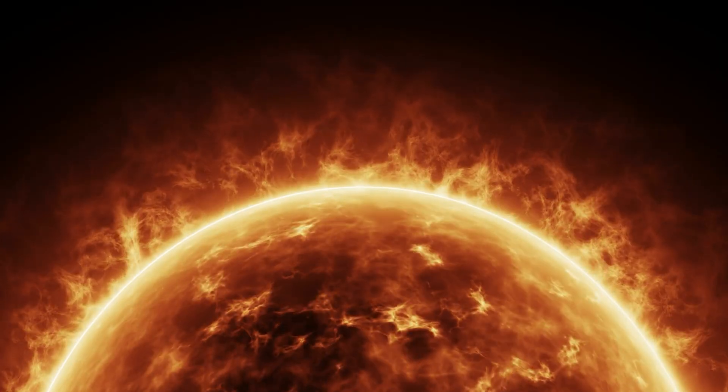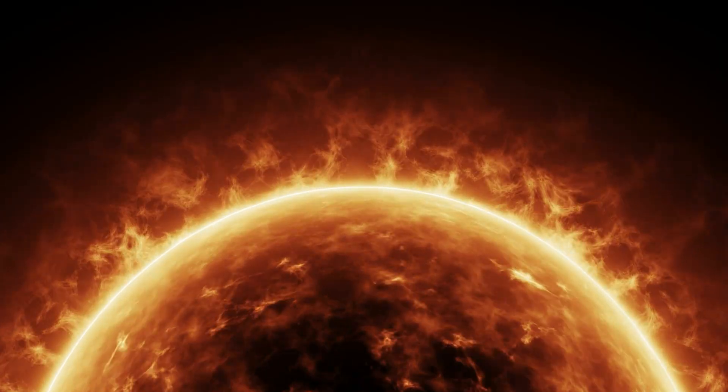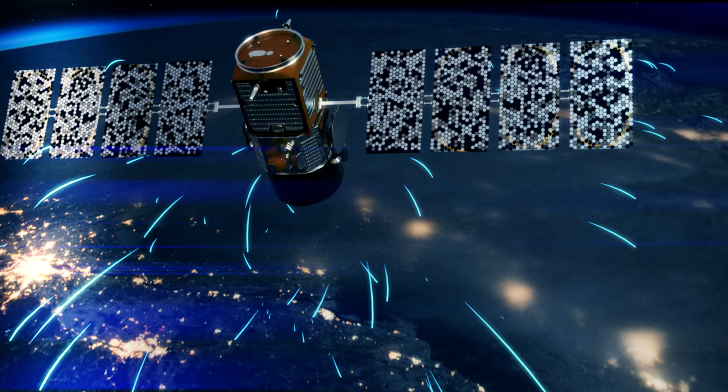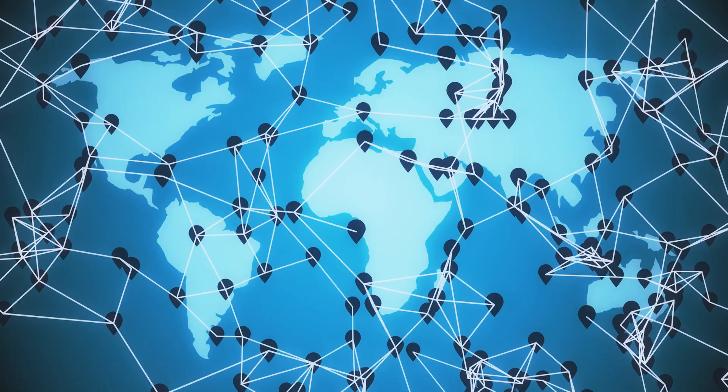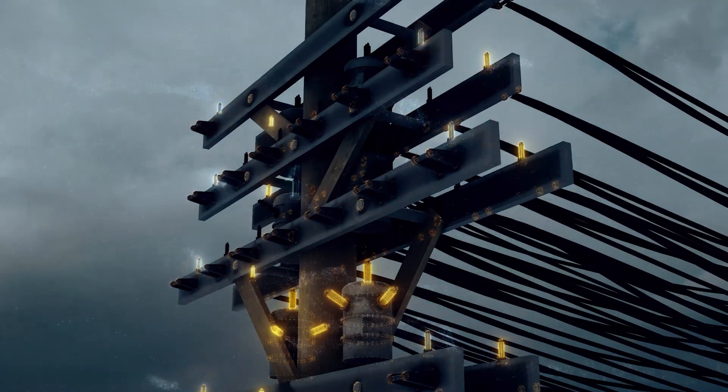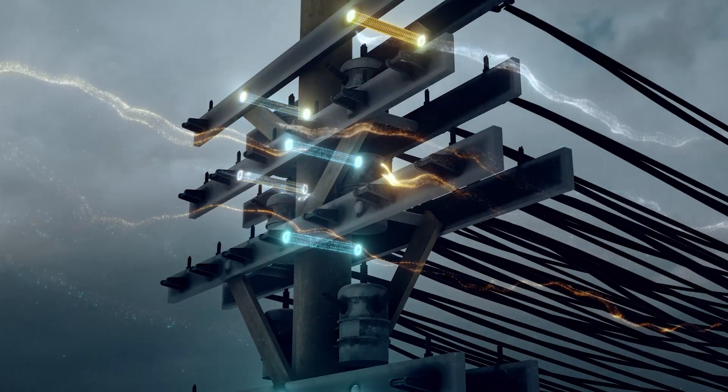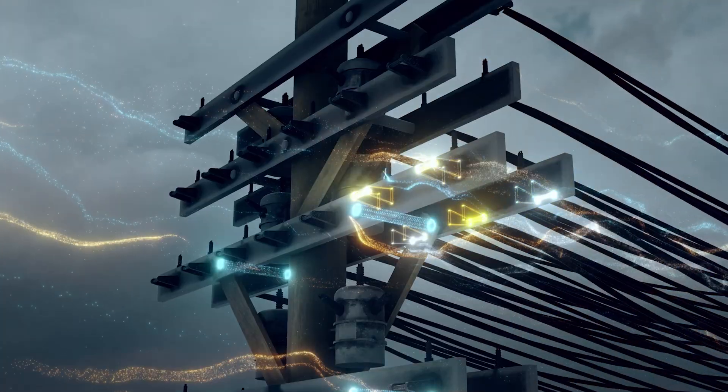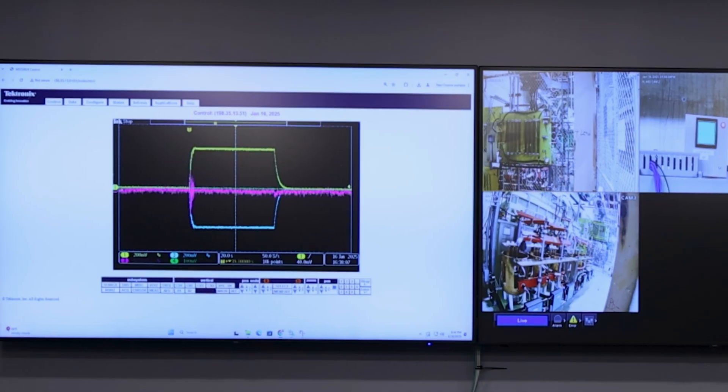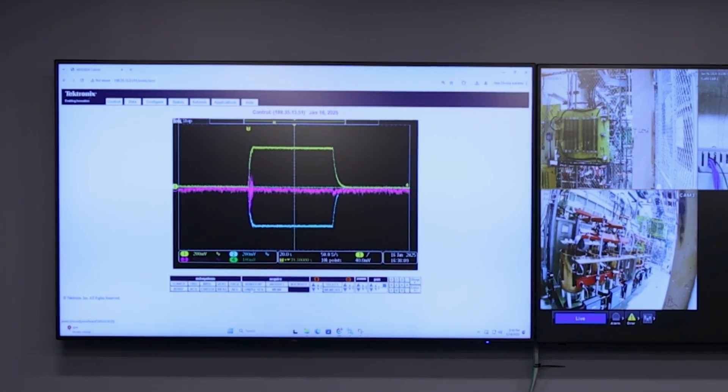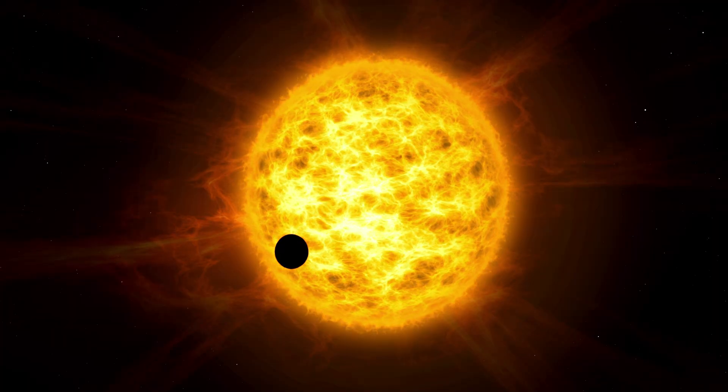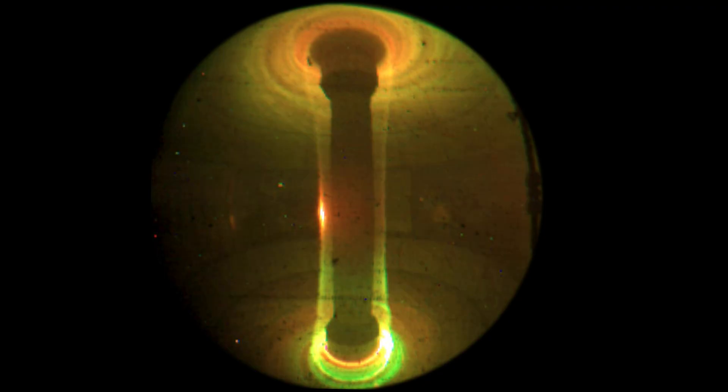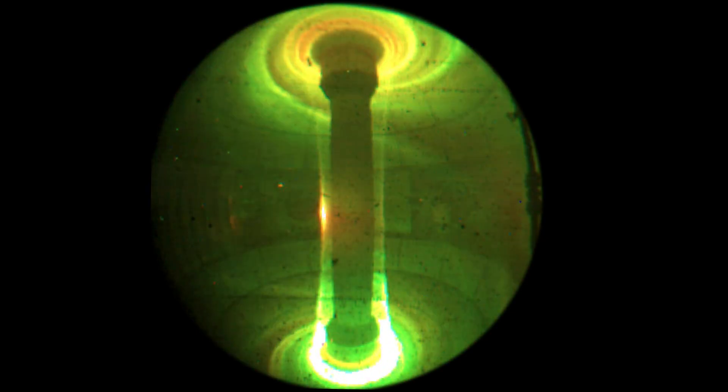Solar eruptions produce intense winds of charged particles that can damage communication systems, GPS networks, and electrical grids, leading to blackouts and internet outages that take months to repair. Understanding the mechanisms behind these eruptions could help us minimize communication network damage against solar outbursts and enhance the stability of tokamak operations.